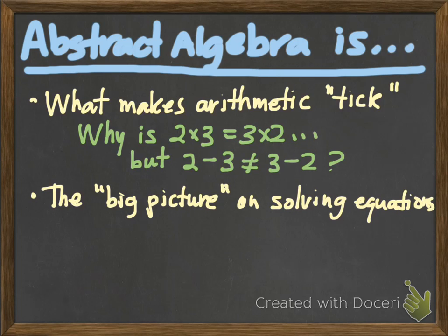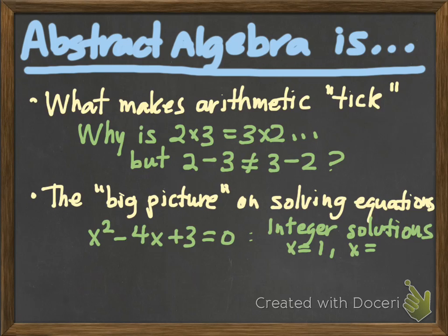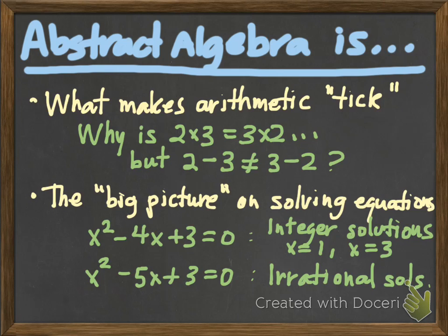We might think about it in a couple of different ways. First of all, abstract algebra, as you probably already know, having taken the first semester, is what makes arithmetic tick. In other words, why, for instance, is 2 times 3 the same thing as 3 times 2? We have the commutative property of multiplication of integers, but it's not the same for subtraction as it is for multiplication.